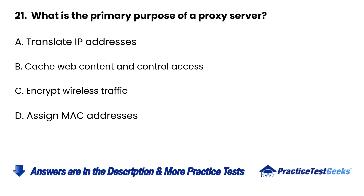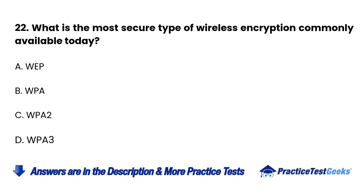Question 21: What is the primary purpose of a proxy server? A. Translate IP addresses. B. Cache web content and control access. C. Encrypt wireless traffic. D. Assign MAC addresses.